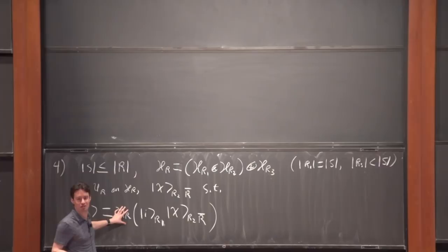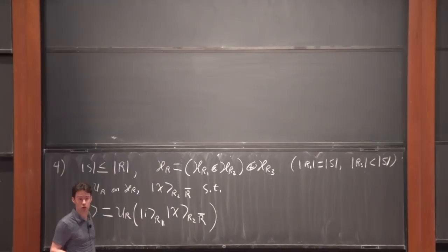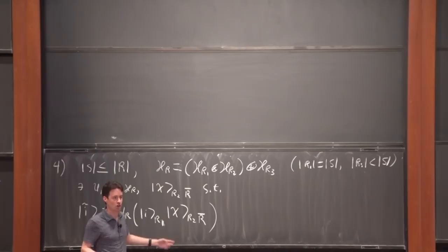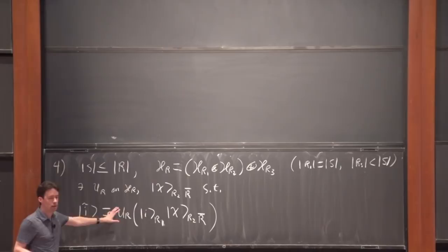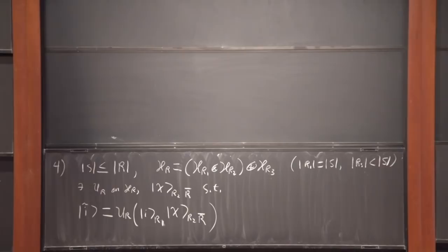The fourth condition: the dimensionality of S must be less than or equal to the dimensionality of R — clearly necessary since R must be big enough to host the code subspace. Moreover, we can decompose H_R into a tensor product H_{R1} ⊗ H_{R2} ⊕ H_{R3}, such that dim(R1) equals dim(S) and dim(R3) is less than dim(S). This is always possible by long division of the dimensions. Then there exists a unitary U_R on H_R and a state χ in H_{R2} ⊗ H_{R-bar} such that a basis for the code subspace has the form U_R |i⟩_{R1} |χ⟩_{R2,R-bar}.